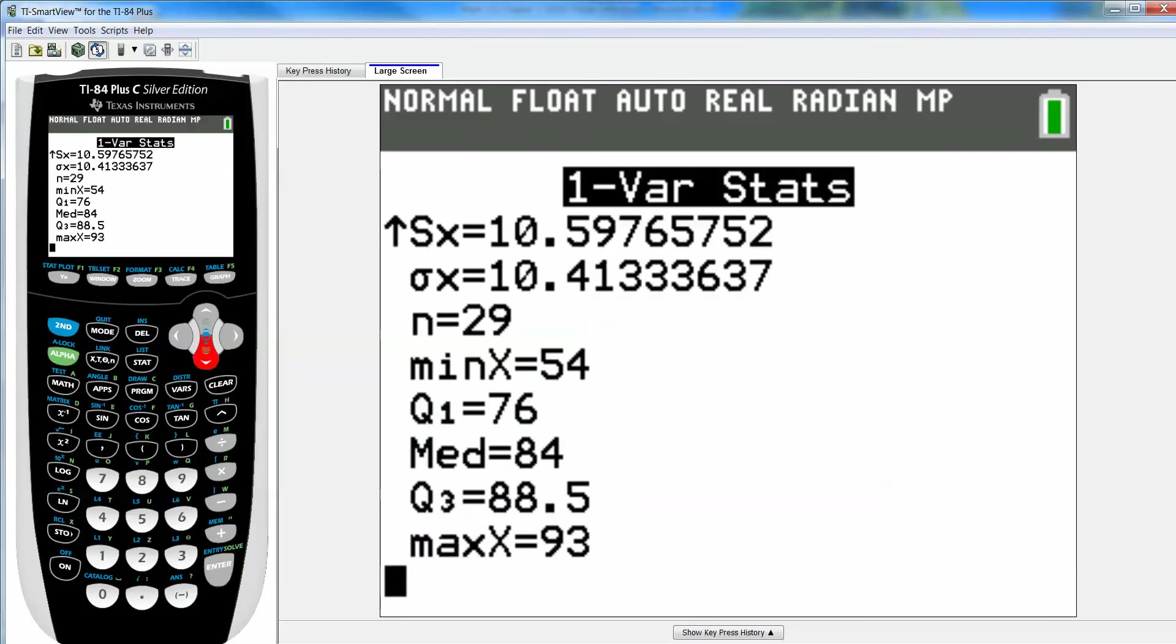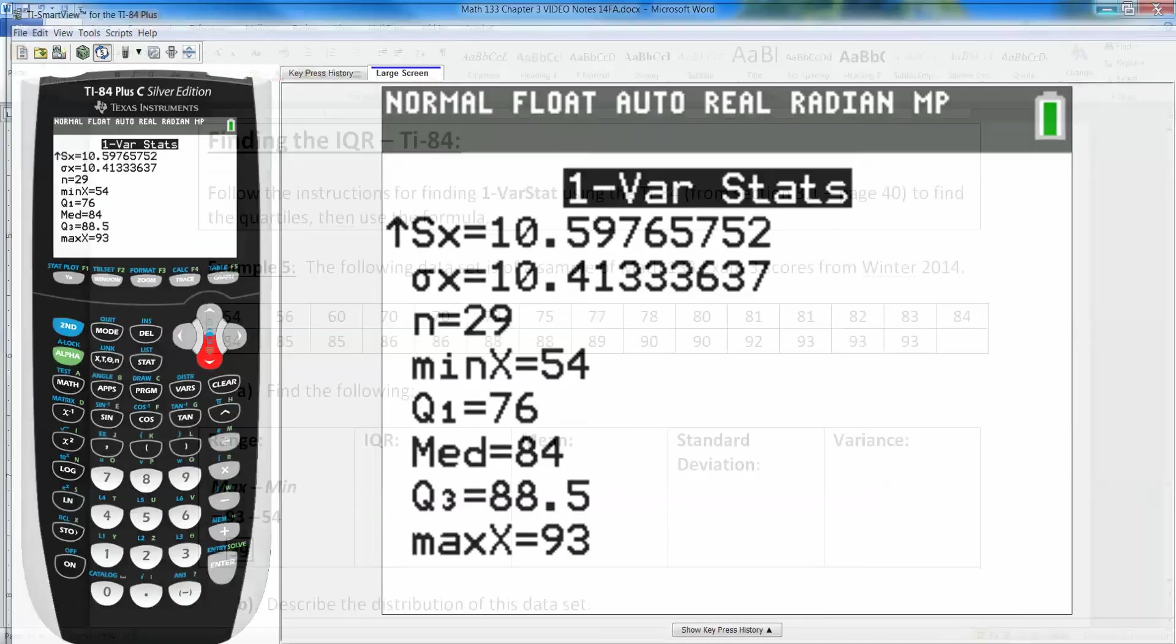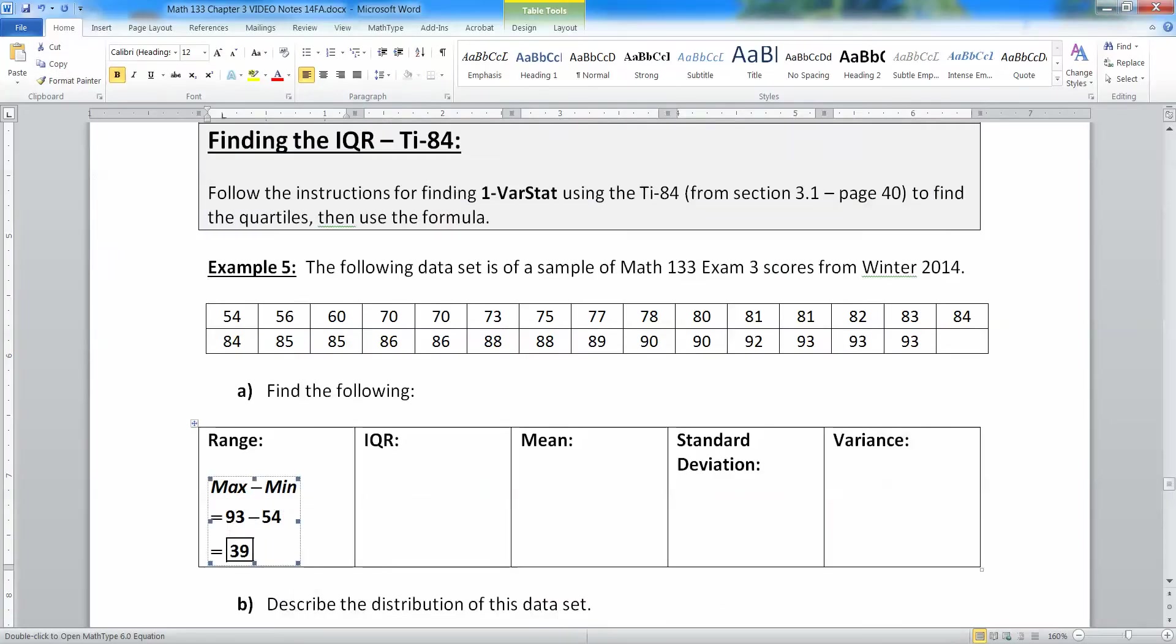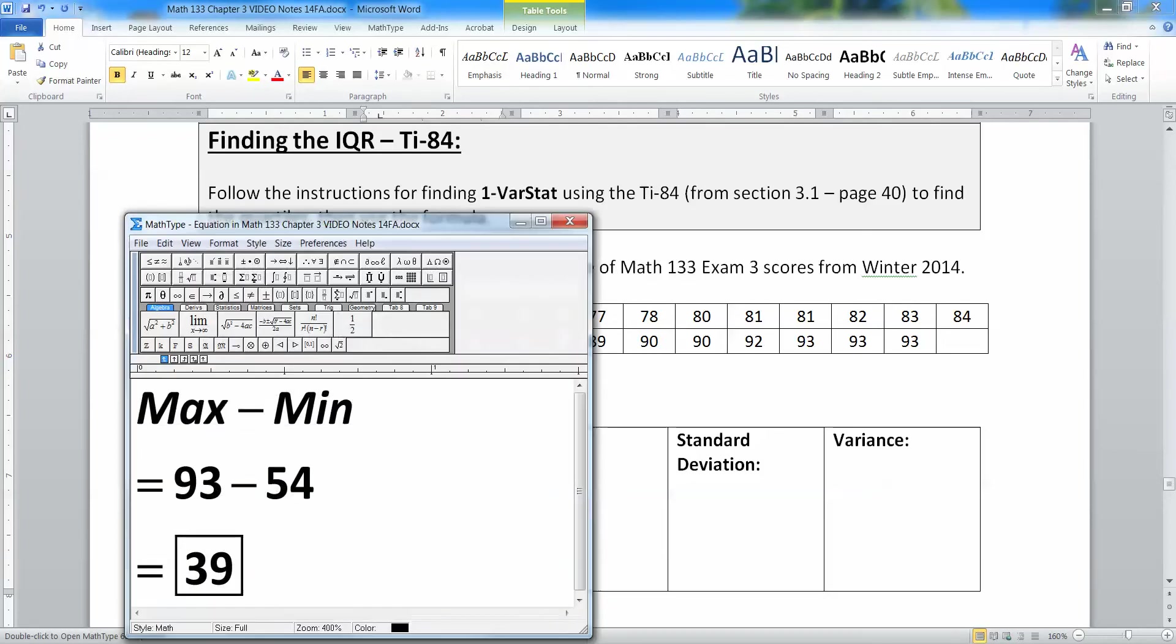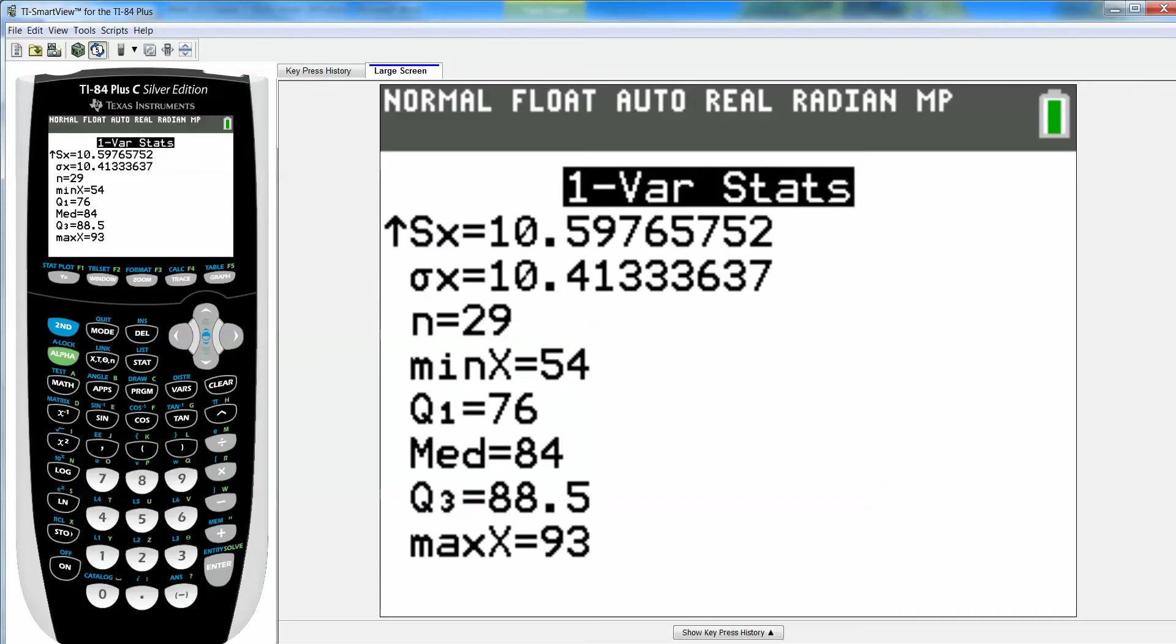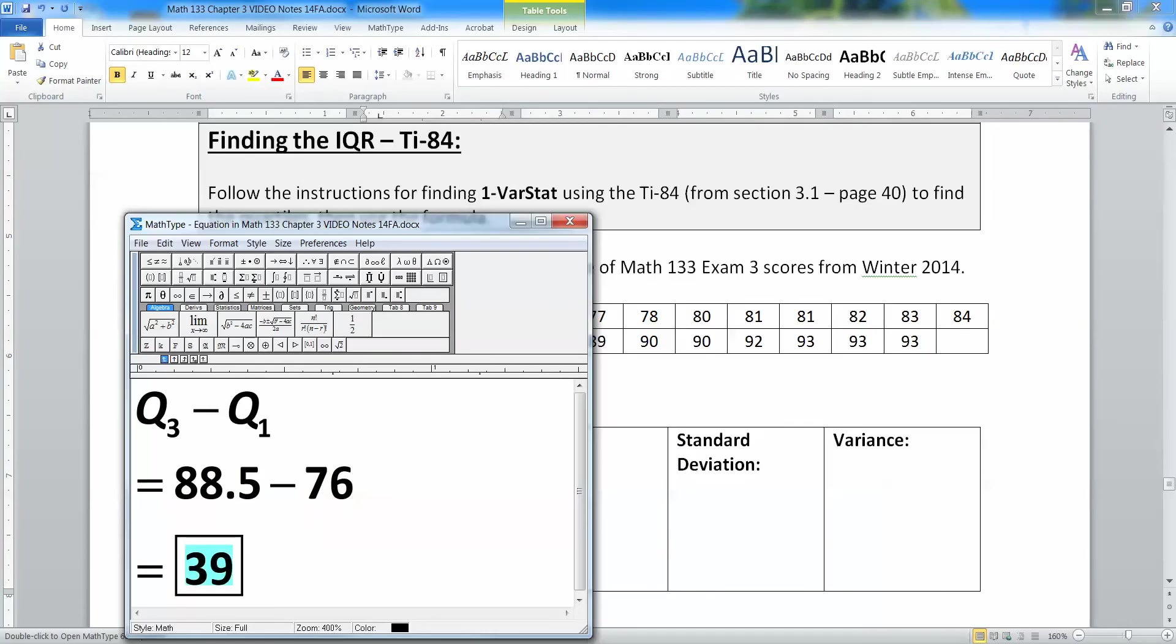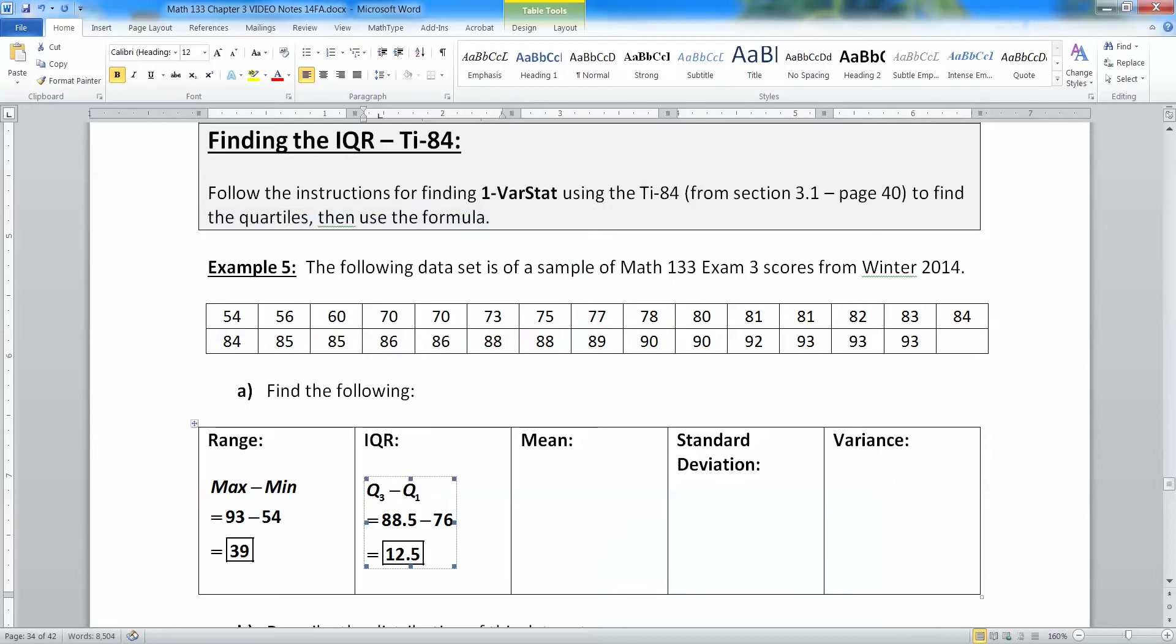Now down at the bottom, you can see there's Q1 and there's Q3, and there's the min and there's the max. So the min and the max you can use to help find your range. So you take 93 minus 54. Then for the IQR, you take 88.5 and minus 76. So the IQR would be Q3 minus Q1. So that's 88.5, take away 76, which is 12.5. And there we go.